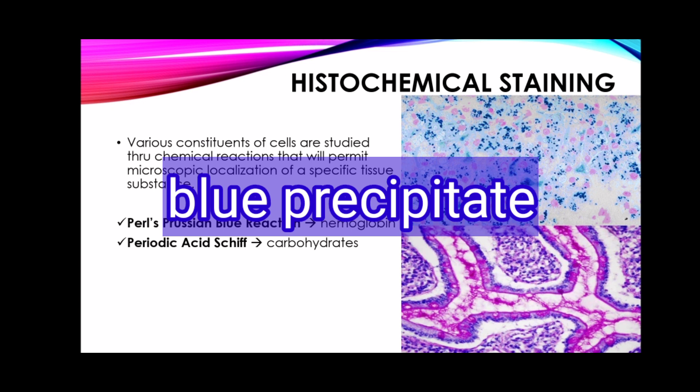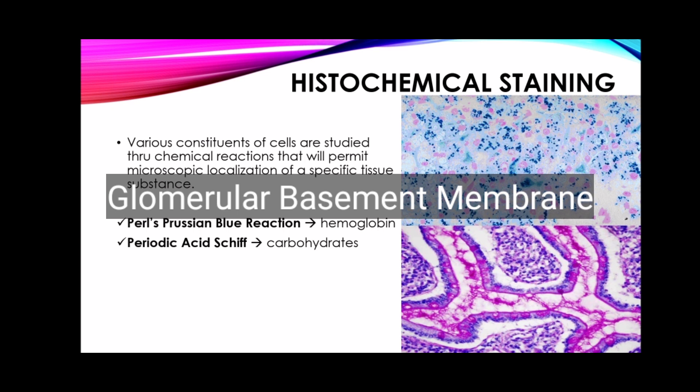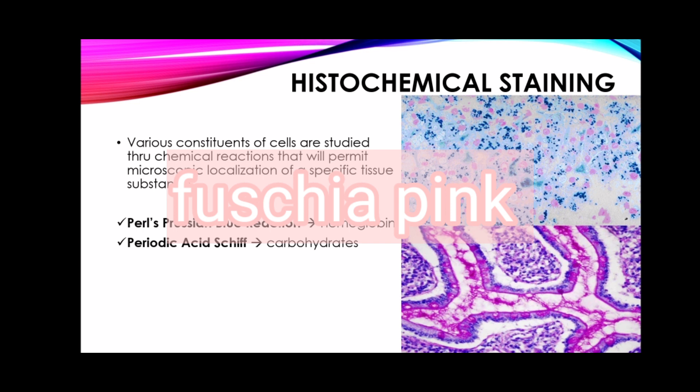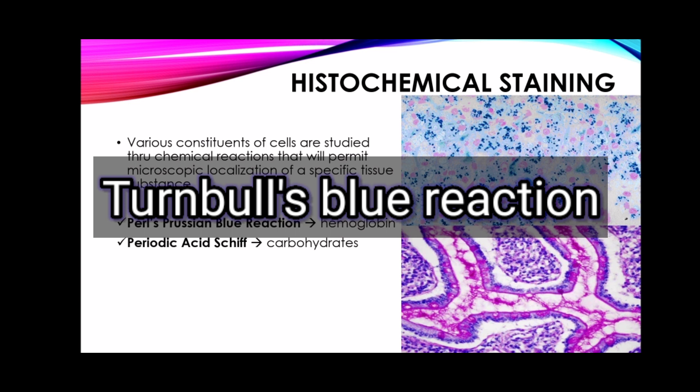Another example for histochemical staining is Periodic Acid-Schiff (PAS), used to stain carbohydrates. It also stains the glomerular basement membrane of the kidneys, giving it a fuchsia pink color. Another example is Turnbull's blue reaction, which stains the ferrous form of iron.